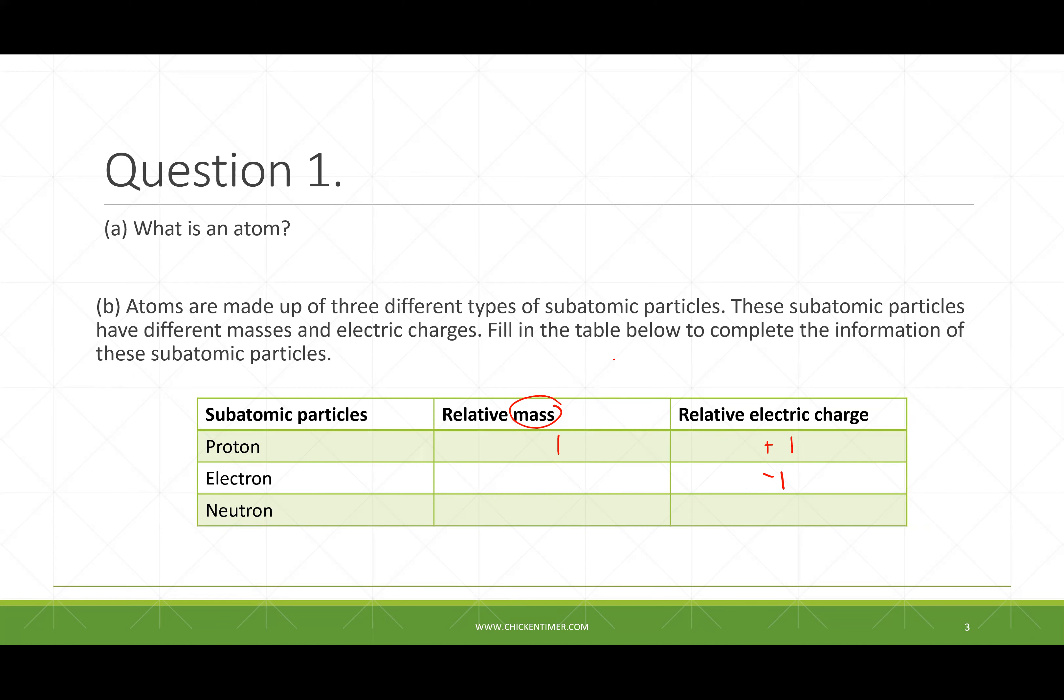So for electron, if you say electron mass is 1, that means it is the same size as the proton. Do you mean that? So you are telling me the electron size is the same as the proton size. Am I getting it correct from you? Yeah.